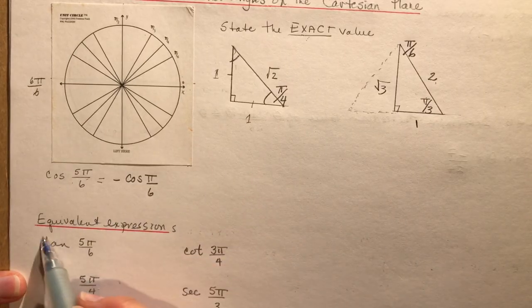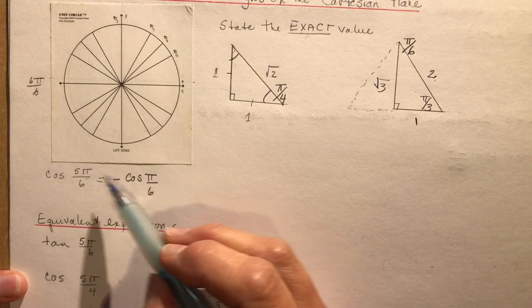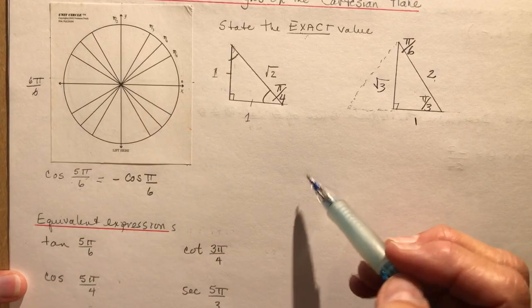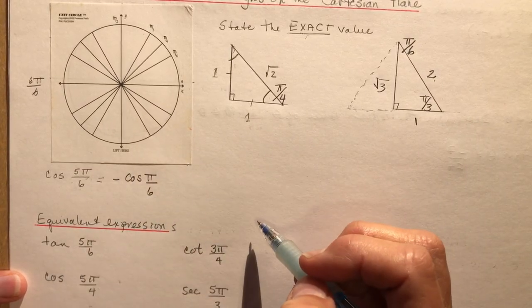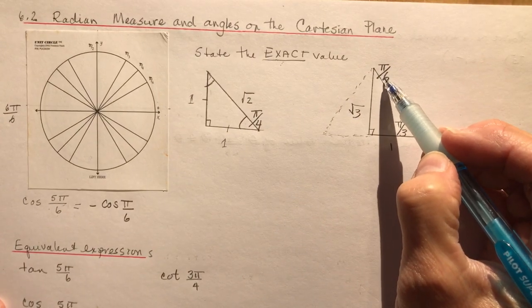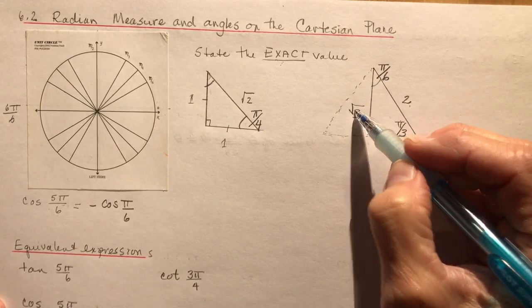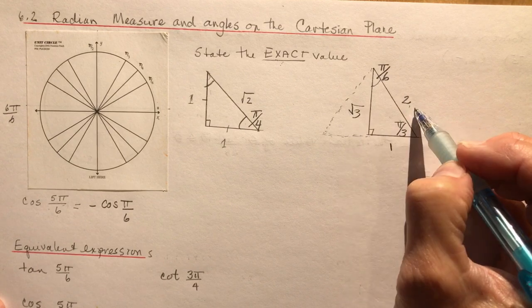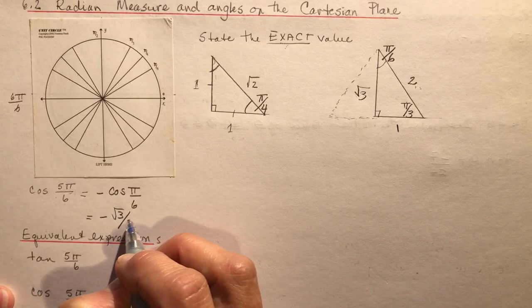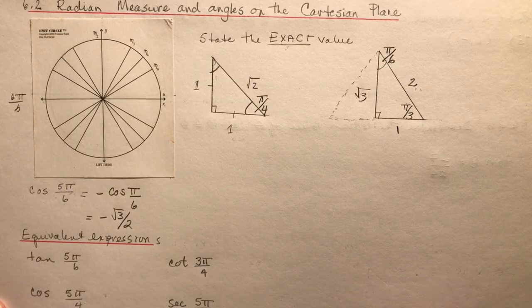We want to write equivalent expressions, so let's work through this. The negative cos of π/6 — using cosine as adjacent over hypotenuse (SOH CAH TOA) — gives us √3/2. So the answer is negative √3/2. That's the exact value of cos(5π/6).